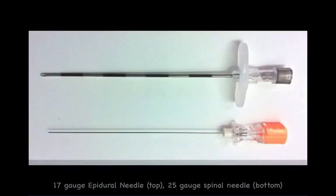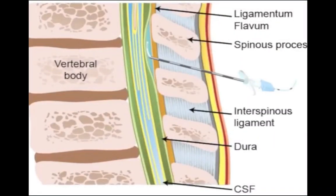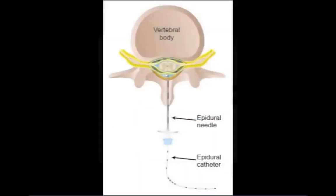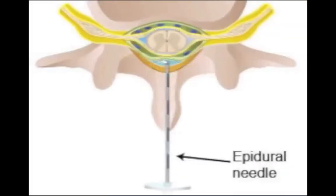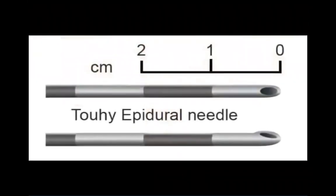An epidural needle has a much wider diameter bore than a spinal needle. The wider bore allows a catheter to be passed through the needle into the epidural space. The tip of the needle is blunt to decrease the chance of it inadvertently piercing the dura, and the tip is also beveled to facilitate passage of the catheter into the epidural space. Centimeter markings along the epidural needle allow the clinician to easily identify the depth of the needle from the skin to the epidural space.